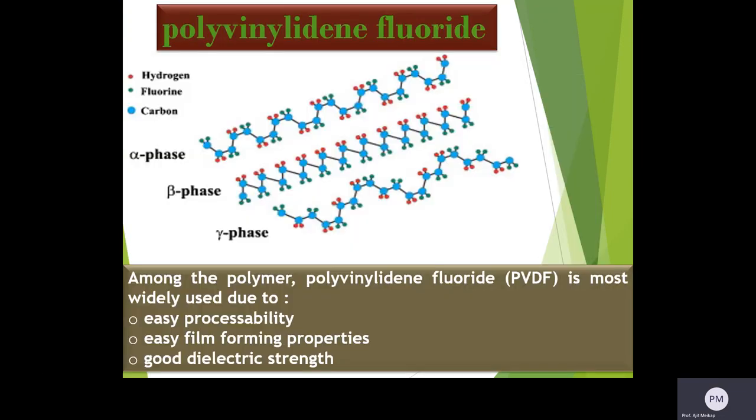Among the polymers, PVDF is most widely used due to easy processability, easy film thermal properties, such as good dielectric strain. The structure of different phases like alpha, beta, and gamma of PVDF are shown here.